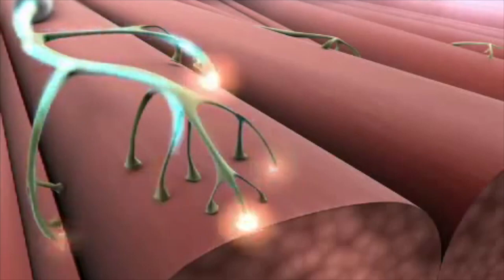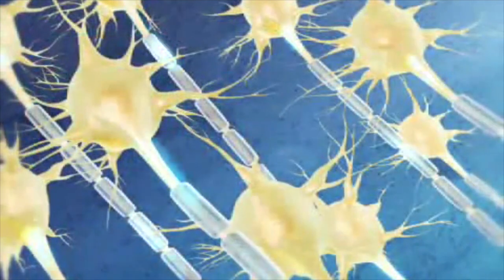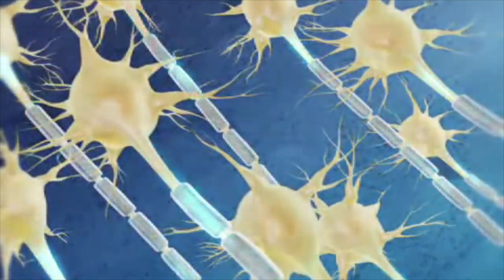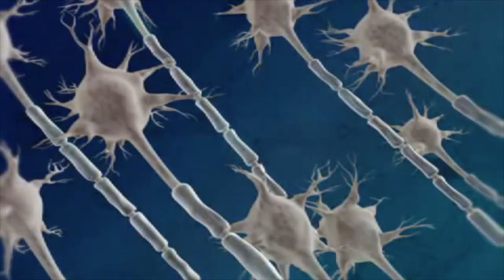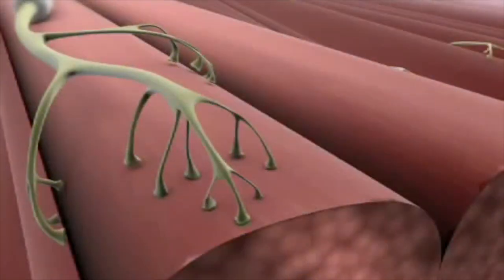In ALS, as motor neurons are destroyed and their long projections die back, the brain can no longer communicate with muscles throughout the body. As a result, muscles become paralyzed.